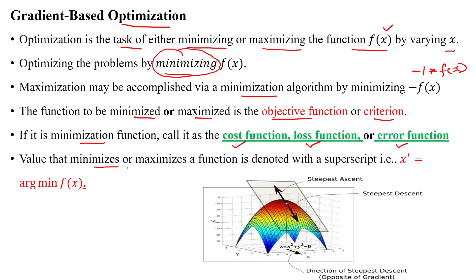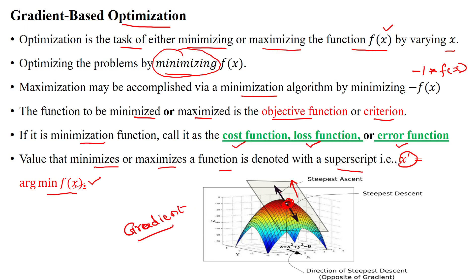The value minimizing or maximizing a function is denoted as x* = argmin f(x), meaning we want to reduce the error with respect to x. If the error is at a certain position and we are moving upward, that is called gradient ascent. Gradient means the rate of change — changing the value in a particular direction. Gradient ascent means increasing the value, moving upward.